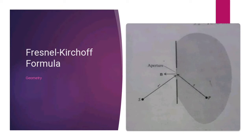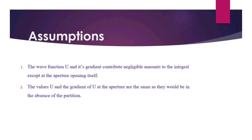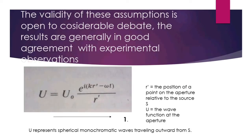Now let's see how to derive the Fresnel-Kirchhoff formula. We have to take some assumptions. The first assumption is that the wave function u and its gradient contribute negligible amounts to the integral except at the aperture opening itself. The second assumption is that the value of u and the gradient of u at the aperture are the same as they would be in the absence of the partitions. The validity of these assumptions is open to considerable debate, but the results are generally in good agreement with experimental observations.